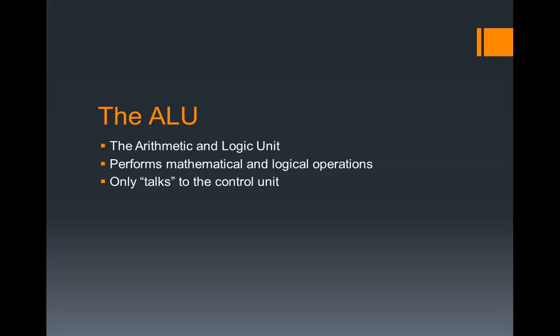So essentially, if you needed to add 2 plus 2 — if you have your calculator program in Windows open and you add 2 plus 2 — the ALU on the CPU does all of those calculations. It adds 2 and 2, it multiplies 7 and 9.